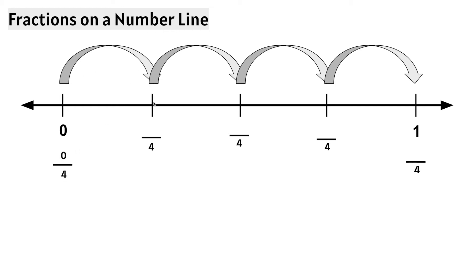If we travel one tick mark between 0 and 1 whole, we can say we've traveled 1 fourth, or 1 out of the 4 equal sections to 1 whole. If we travel 2 equal sections, we can say 2 out of 4, or 2 fourths. If we hop one more, we can say we've traveled 3 fourths of the way to 1 whole. And jumping one more brings us to 1 — the whole number 1 — we can also say 4 fourths, or 4 out of the 4 equal sections between 0 and 1.